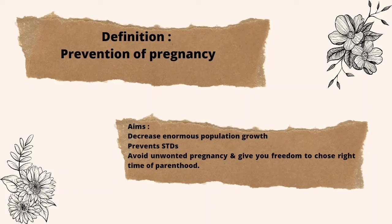We begin with our topic — definition. What is contraception? It is the prevention of pregnancy. Why is pregnancy prevented? The reasons are: to control population growth, as birth rate decreases; to prevent sexually transmitted diseases like gonorrhea, syphilis, and AIDS; to avoid unwanted pregnancies; and to give freedom to choose the right time of parenthood.